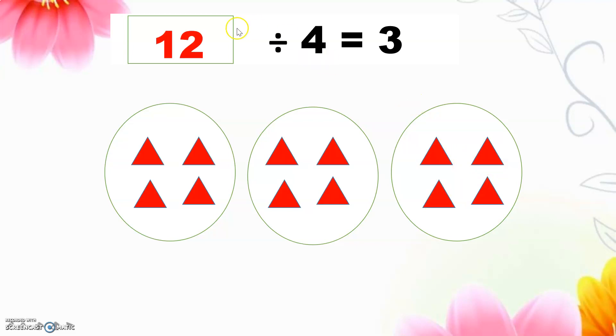This one we know as number sentence with unknown. That means we don't know what is the total. So we will do the reverse.